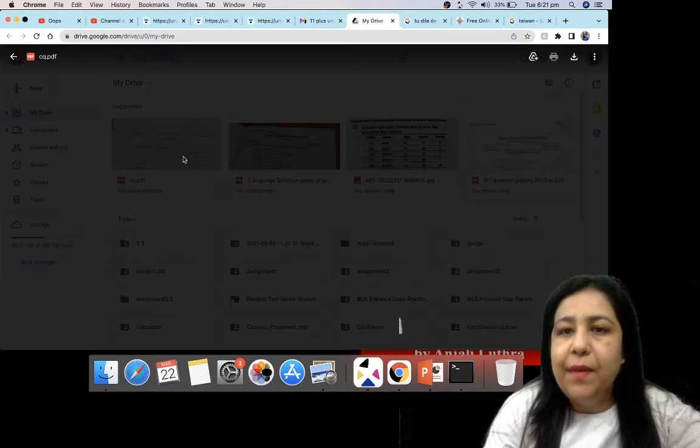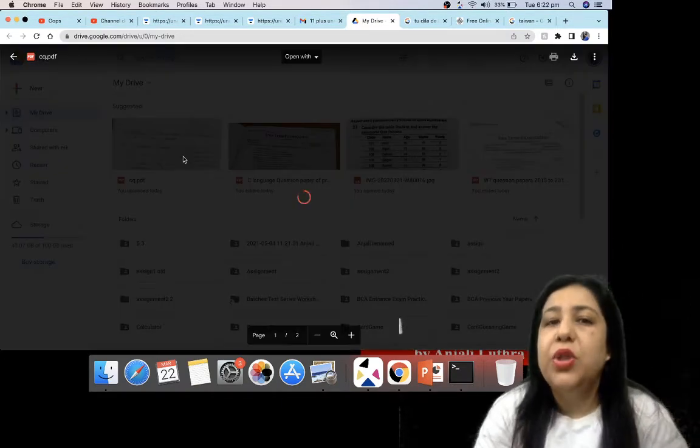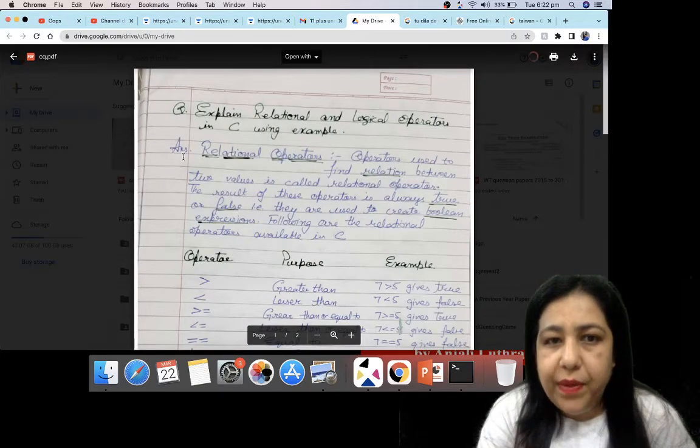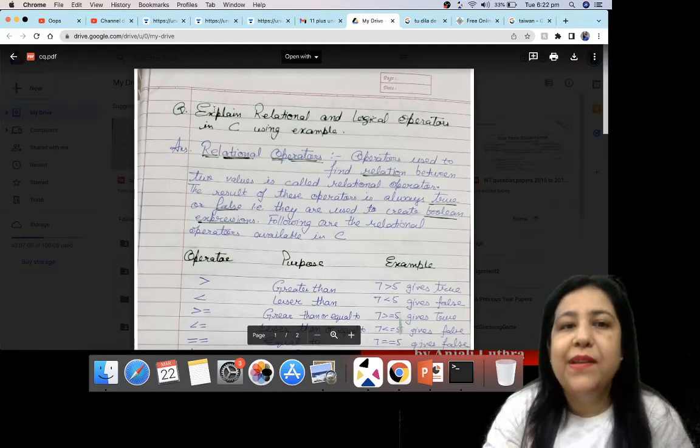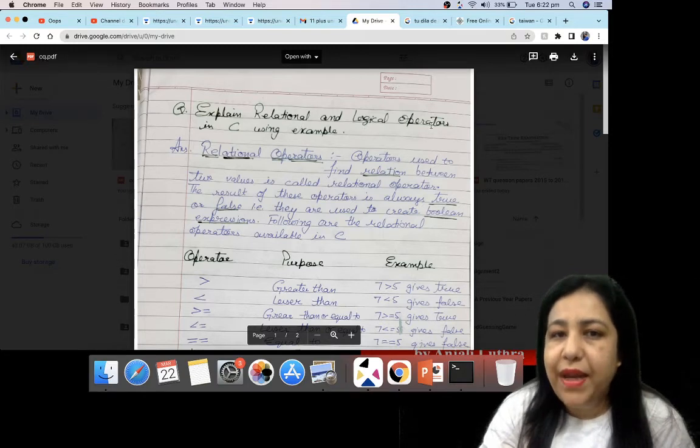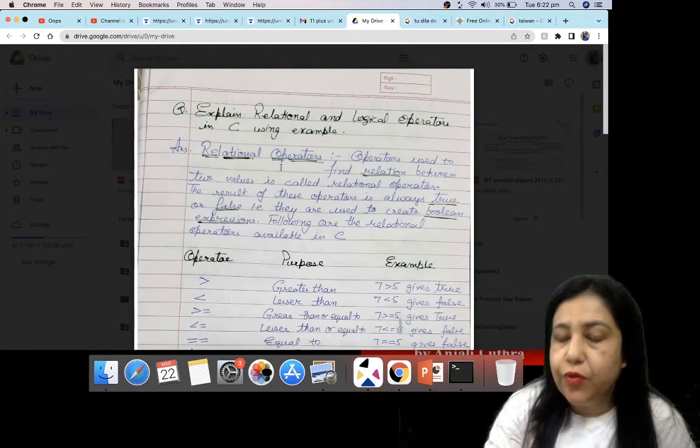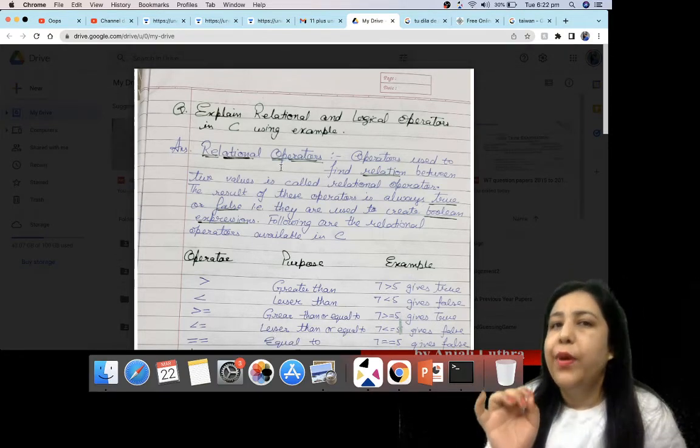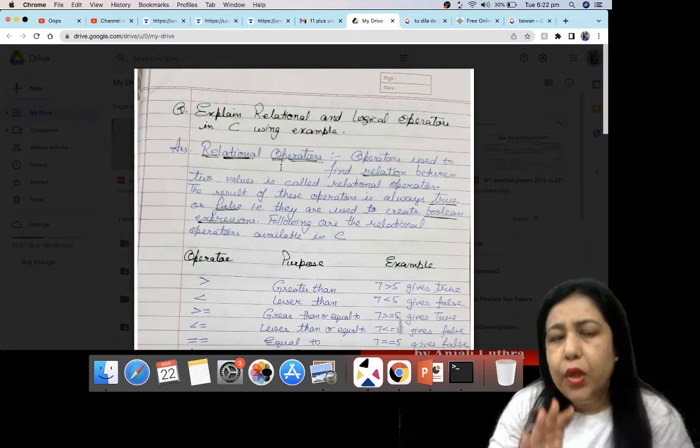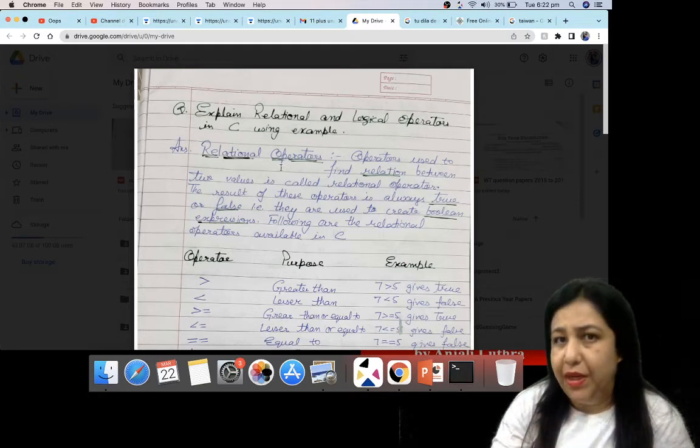Now, let's talk about how the proper answer should be written. If you have a question that you have to explain the relational and logical operators, the first thing you keep in mind is that if the question is 5 marks, you have to write at least one and a half pages.